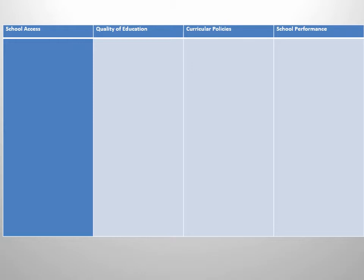Regarding curriculum policies, the key thing to know is the shift from the three R's to the three C's — from reading, writing, and arithmetic to command of the English tongue, civics instruction, and related areas. The key shift is from an academic curriculum to a focus on Americanization or socialization, meaning Mexican-American students didn't have the same access to a rigorous academic curriculum.